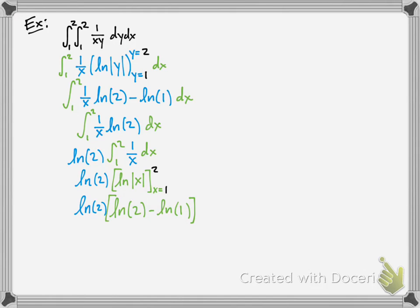And we do the same thing. You get ln of 2 minus ln of 1. That's the same thing as ln of 2. But we also have that constant out there as well that we moved out earlier, which is also ln of 2. So the answer is ln 2 squared.